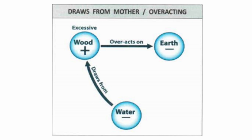Wood over-exerts pressure on earth, totally depleting its nutrients. Earth over-controls water, smothering it completely so the river disappears. Water extinguishes fire altogether and there is no more spark of enthusiasm. Fire over-melts metal to the point that metal vaporizes and disappears. Metal chops all the wood — such as mankind's machines destroying all the forests.